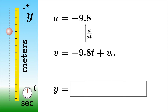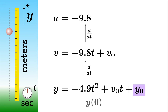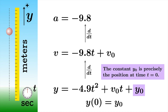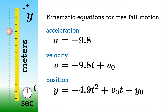We can also ask: what would the position function be? We need to find a function whose derivative equals negative 9.8t plus v₀. Using the power rule in reverse, negative 4.9t² is a function whose derivative is negative 9.8t. Similarly, v₀t is a function whose derivative is just the constant v₀. We get to add another constant, which we'll call y₀ — because when we plug zero into this position function, we get y at zero. So y₀ is precisely the position at time t = 0. These give us the kinematic equations for free fall motion.